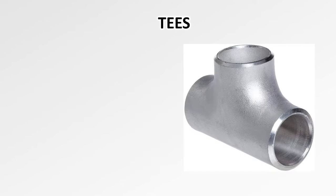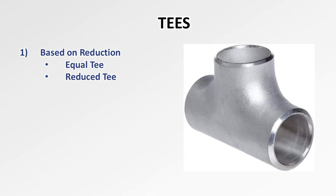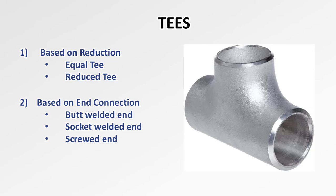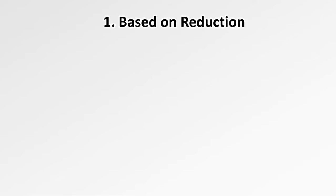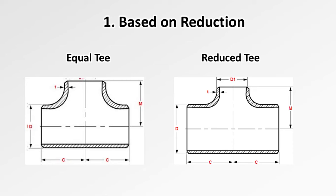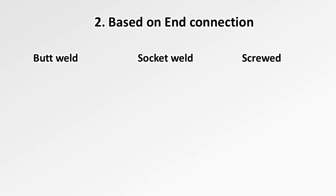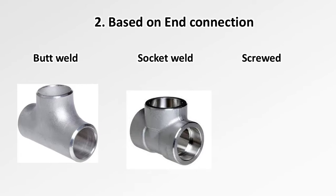The next fitting is the tee. Tees are also classified into various types. One type is based on reduction — we have equal tee and reducing tee. Another type is based on end connection: butt weld, socket weld, and screwed ends. The difference between equal tee and reducing tee is that in an equal tee, the branch size is equal to the header size. In a reducing tee, the branch size is always one size lesser than the header size, denominated as D1, while the main size is denominated as D.